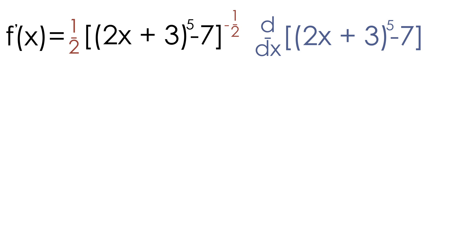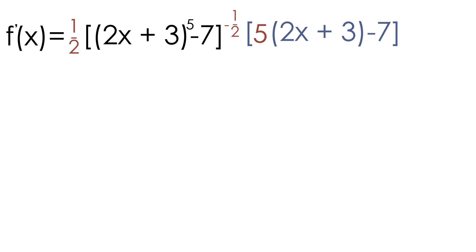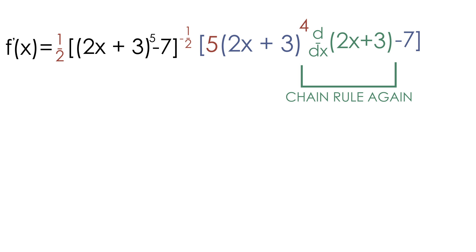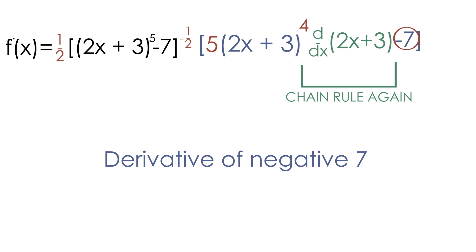Let's take our exponent of 5 and multiply it in the front, and then our new exponent is going to be subtracted by 1 — 5 minus 1 is equal to 4. Then we multiply everything by the derivative of the inside of the parentheses, so we multiply all this by the derivative of 2x plus 3. We also need to take the derivative of the negative 7 term, but the derivative of negative 7 is just equal to 0, so that does not change anything.